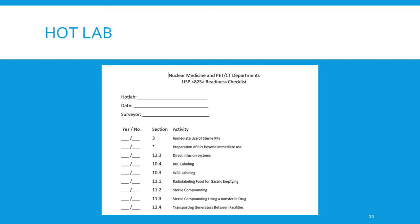The checklist also covers direct infusion systems, red blood cell labeling, white blood cell labeling, radiolabeling for gastric emptying, sterile compounding, sterile compounding used for non-sterile drugs, and transporting generators between facilities.